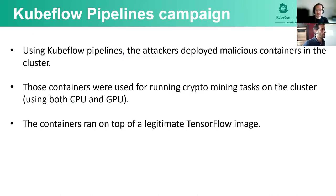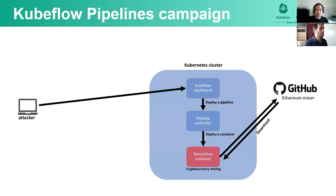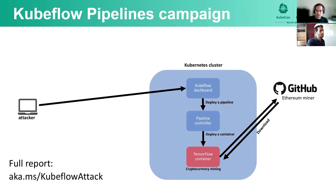Using pipelines, the attackers deployed crypto mining containers. Those containers used a legitimate TensorFlow image from Docker Hub. They also leveraged the fact that in some cases Kubeflow workloads use GPUs for machine learning, in order to increase their gains. Here you can see the attack flow: the attackers accessed the Kubeflow dashboard, used it to deploy a new pipeline, which created a new container via the pipeline controller. The container, which ran a legitimate TensorFlow image, fetched a crypto miner from GitHub and ran it. You can read the full report at this link.